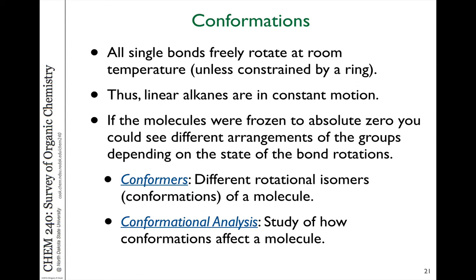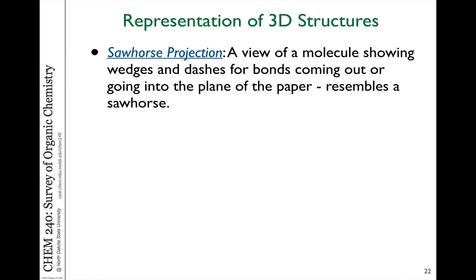We use the word conformer to talk about the different rotational isomers, or conformations, that a molecule can adopt throughout all of its motions. What we're doing is a conformational analysis — looking at a specific frozen conformation of a molecule and comparing it with other conformations or other molecules. In order to represent three-dimensional molecules on a two-dimensional plane, it's important to have good systems so you can express three-dimensionality, and one way is to use what we call a sawhorse projection.